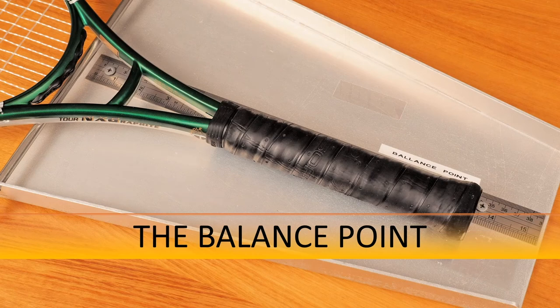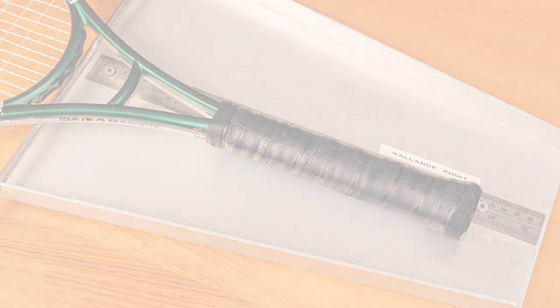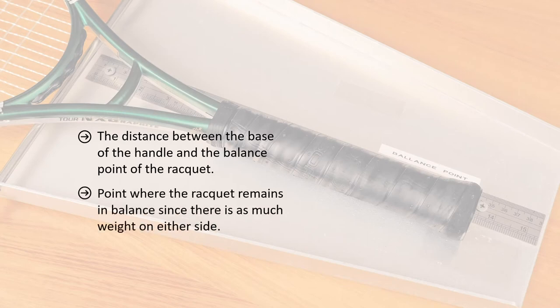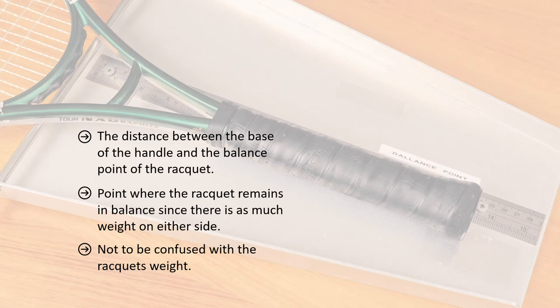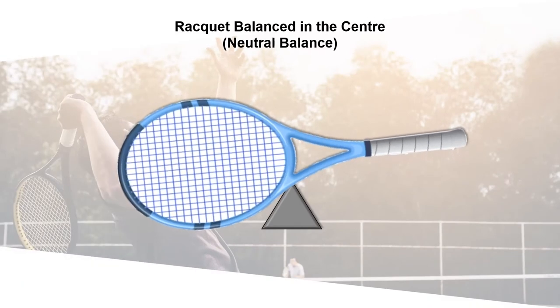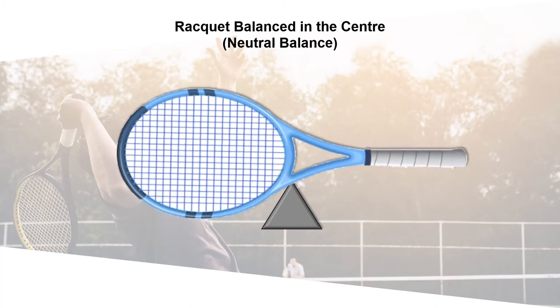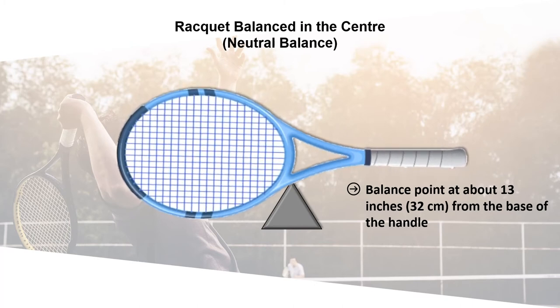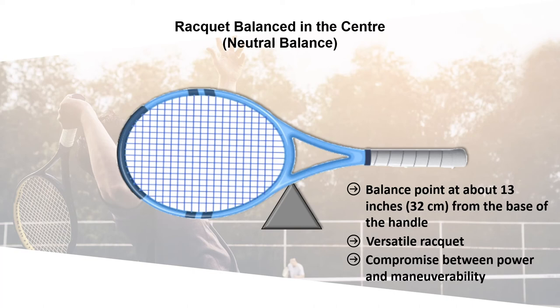Now let's look at the balance point of a racket. The balance point corresponds to the distance between the base of the handle and the point where the racket remains in balance, since there is as much weight on either side. This point is usually located at the midpoint of the racket. The balance should not be confused with the weight of the racket, as it directly influences maneuverability. As the length of the racket is usually 27 inches or 68.5 centimeters, a racket balanced in the center will have its balance point at about 13 inches or 32 centimeters from the base of the handle, offering a good compromise between power and maneuverability.